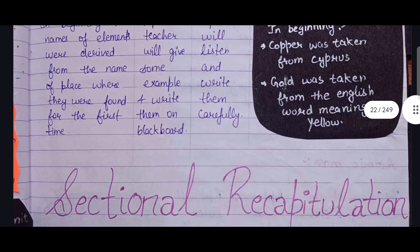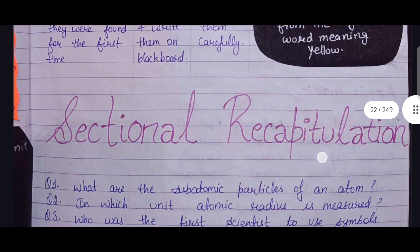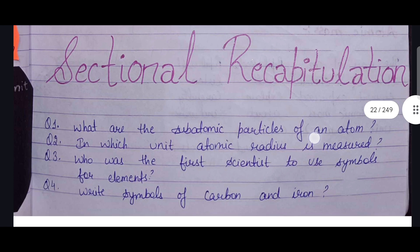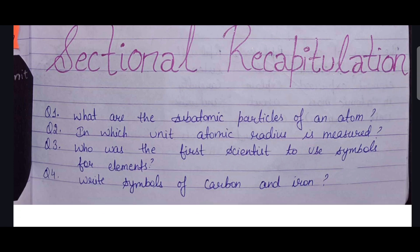Sectional recapitulation involves questions asked during the teaching process. Here I have written three to four questions — it's your choice what you want to write. For example: what are the sub-atomic particles of an atom; in which unit is atomic radius measured; who was the first scientist to use symbols for elements; and write the symbols of carbon and iron.